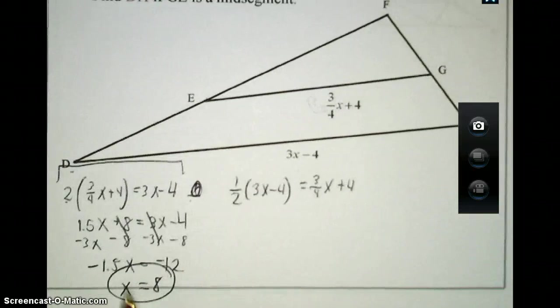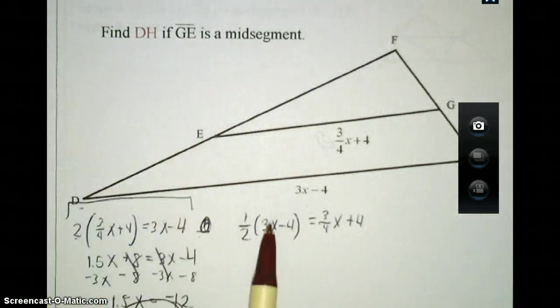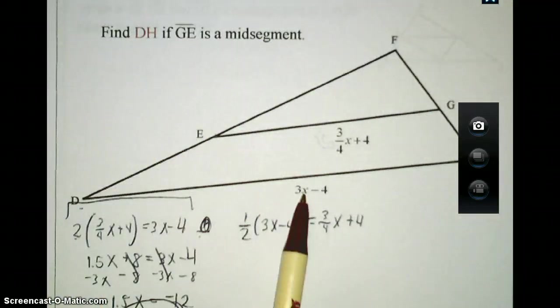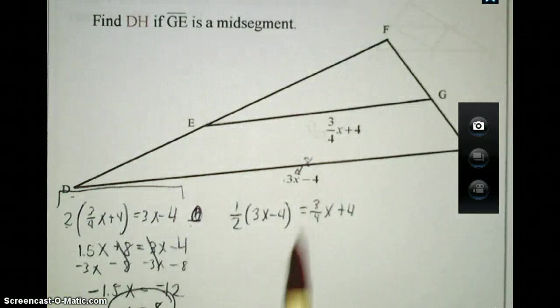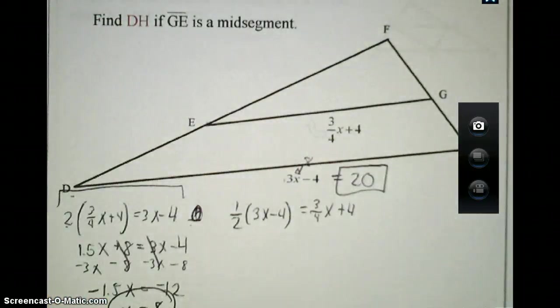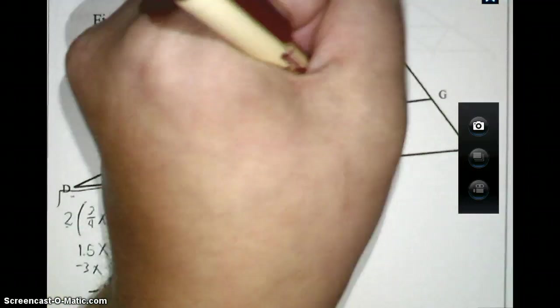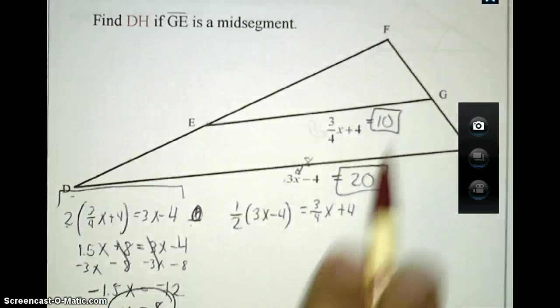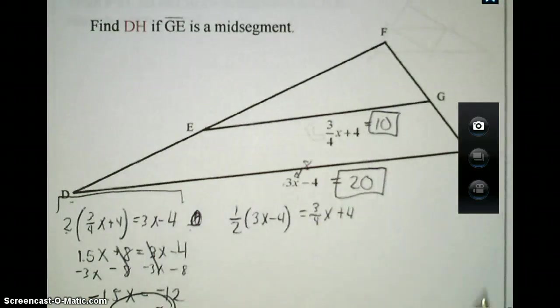This will not complete the problem though. What I need to do now is take this 8 and plug it in for what I need to find. It's asking for DH. The length of DH is valued at 3x - 4, so I'll plug the 8 into the x. 8 times 3 is 24, and 24 minus 4 is going to be 20. If you wanted to check your work, you also should try to plug 8 into the length of GE. The value you should get here is 10, thus showing you that GE ends up being half of HD, which is what the midsegment theorem states.